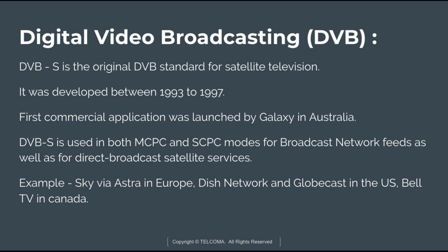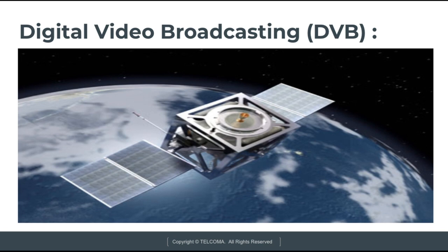Its function is to design and regulate the procedures used in the digital signal transmission of data and services. DVB-S is used in both MCPC, that is Multiple Channel Per Carrier, and SCPC, that is Single Channel Per Carrier mode, for broadcast network feeds as well as direct broadcast satellite services. Examples of DVB include Sky via Astra in Europe, Dish Network and Globecast in the US, and Bell TV in Canada.